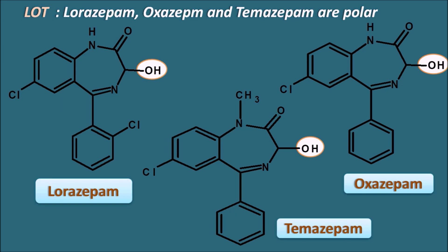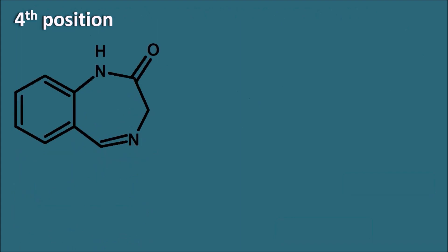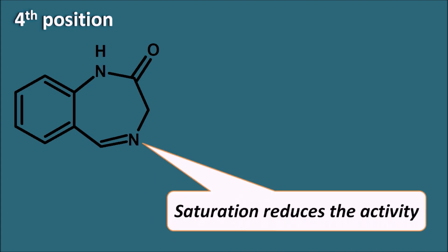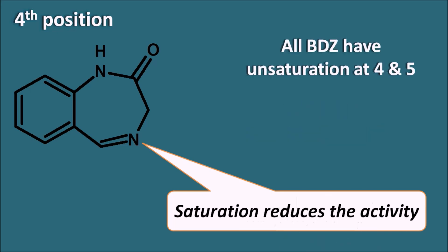At the fourth position, a double bond is normally present in the Benzodiazepine structure. Saturation of this double bond reduces the activity, so all Benzodiazepines retain unsaturation at the fourth and fifth positions. If this double bond is removed, the activity is lost.